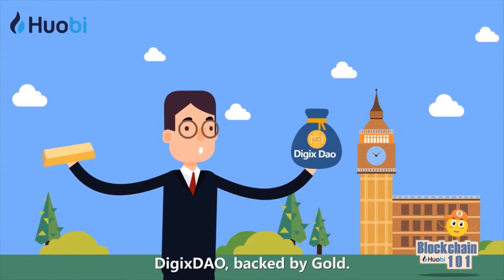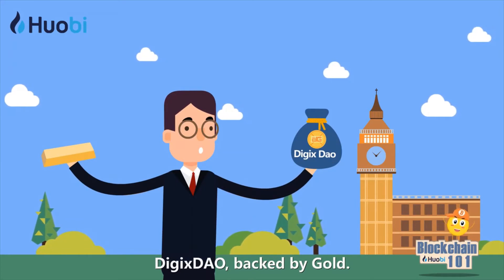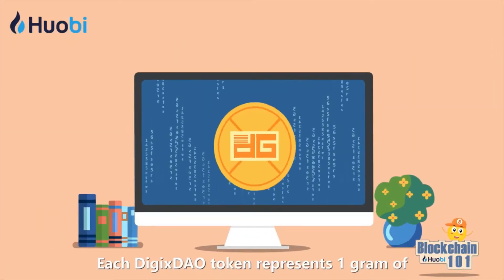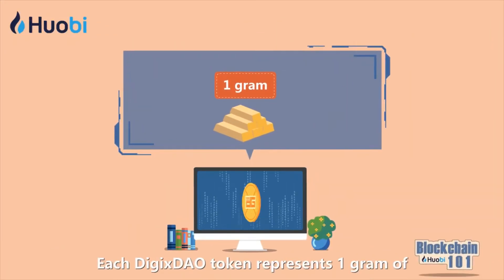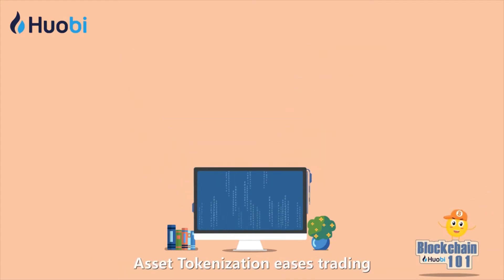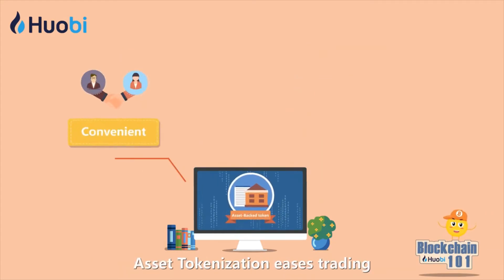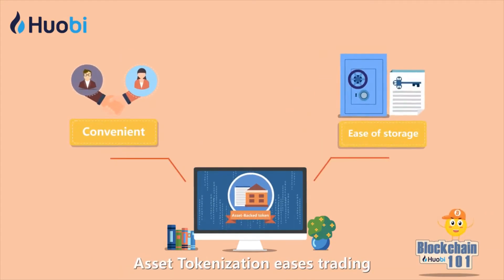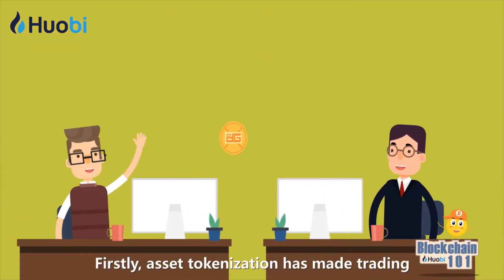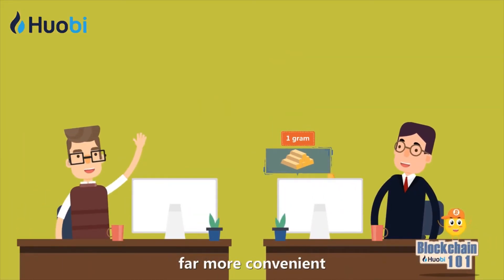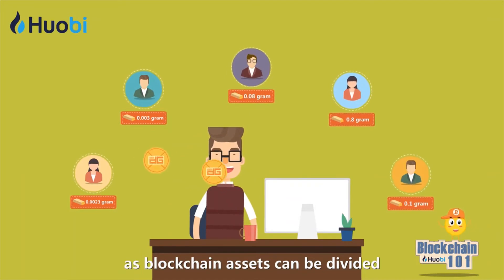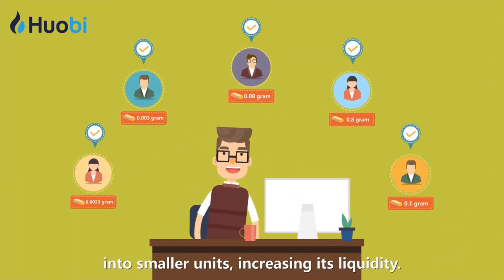Another example is Digix DAO, backed by gold — each Digix DAO token represents one gram of LBMA standard gold. Asset tokenization eases trading and safekeeping. Firstly, asset tokenization has made trading far more convenient, as blockchain assets can be divided into smaller units, increasing liquidity.